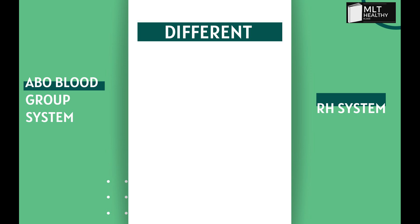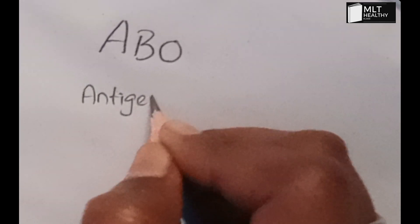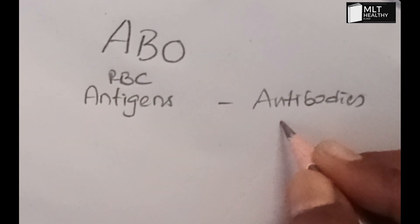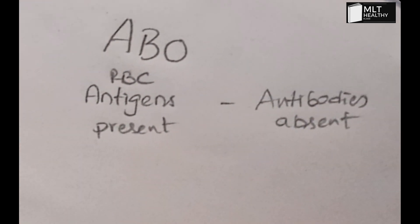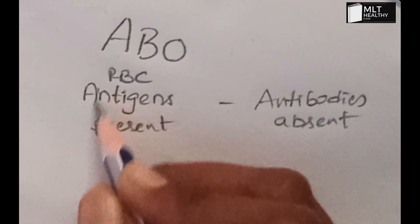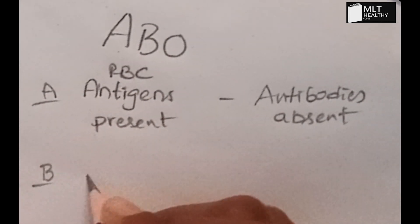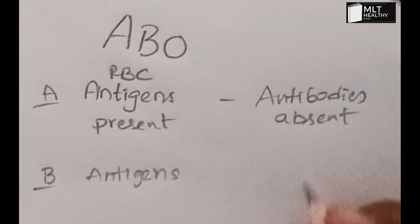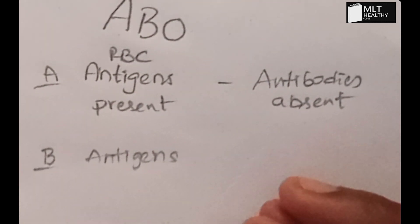The Rh blood group system is very different from the ABO blood group system. In the ABO blood group system, if an antigen is present on the RBC surface, the corresponding antibody must be absent. For example, if A antigen is present, anti-A antibody must be absent; if B antigen is present, anti-B antibody must be absent.